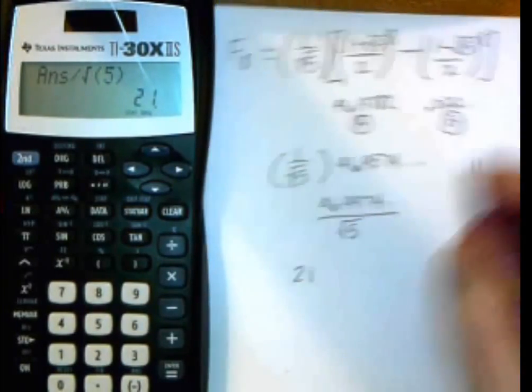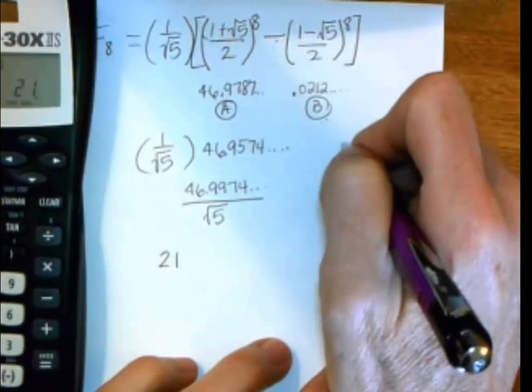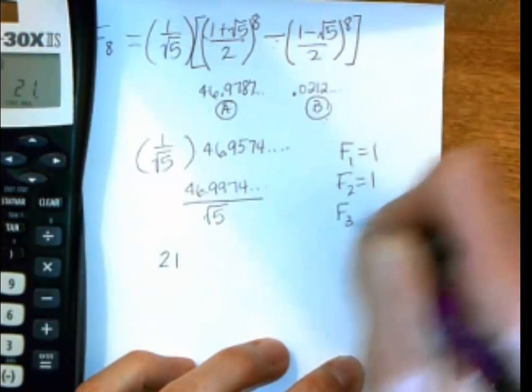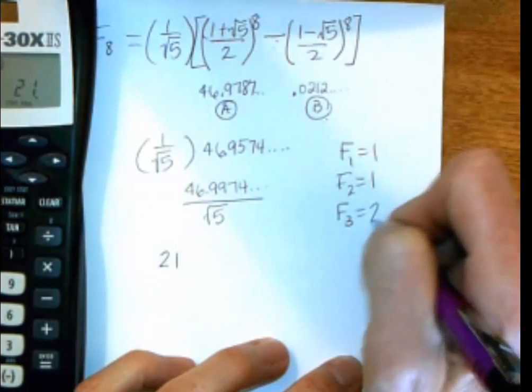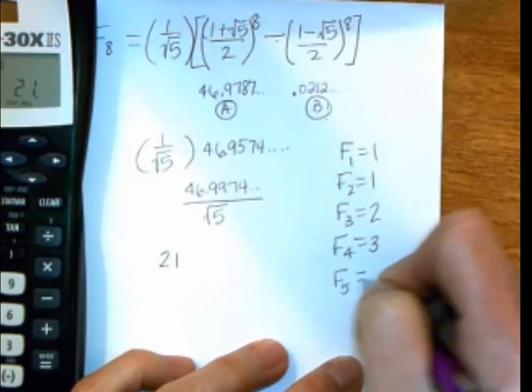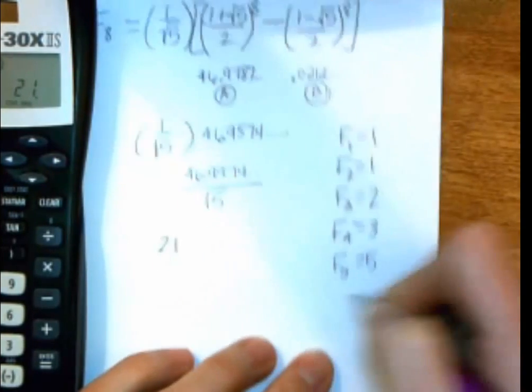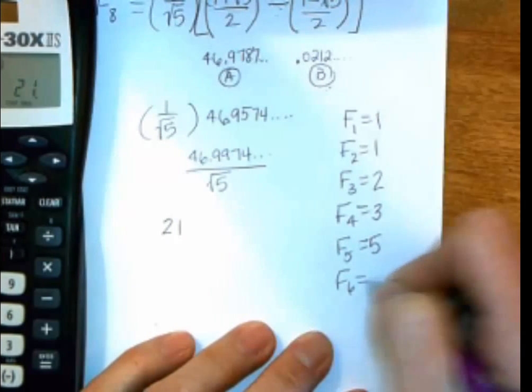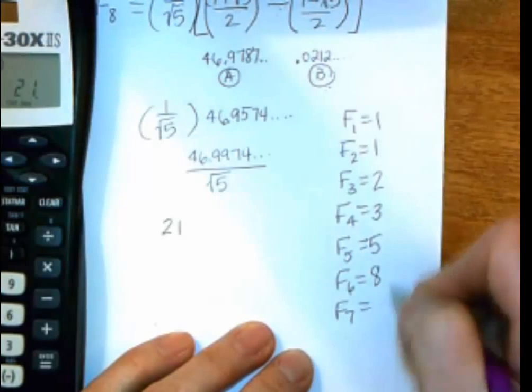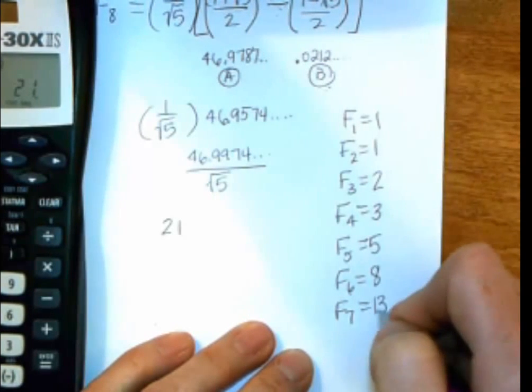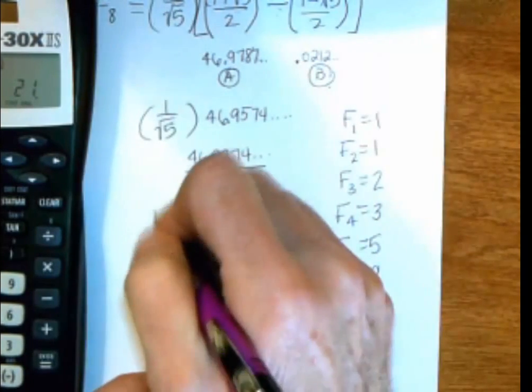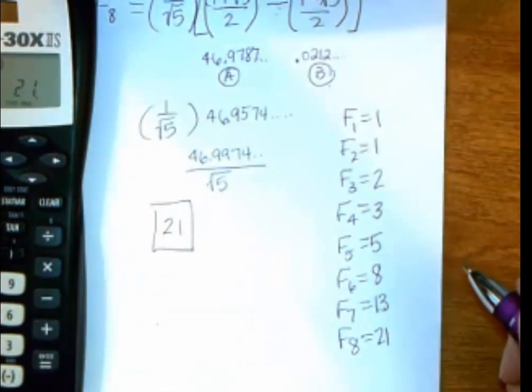Now if you remember, F sub 1 was 1. F sub 2 was 1. F sub 3 was 1 plus 1 or 2. F sub 4, 2 plus 1 or 3. F sub 5, 3 plus 2 or 5. F sub 6 would be 3 plus 5 or 8. F sub 7, we're almost there, 8 plus 5 or 13. And F sub 8 was 13 plus 8 or 21. So we came up with the exact same number.